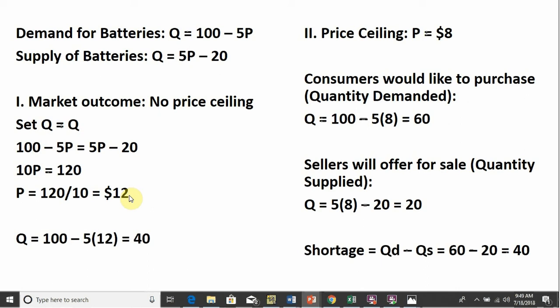We could also plug $12 into the supply equation and get an equilibrium quantity of 40: 5 times 12 is 60, minus 20 is 40. So that's the market outcome with no price ceiling. Let's go to a price ceiling.